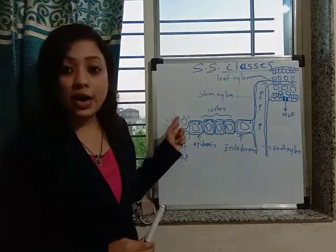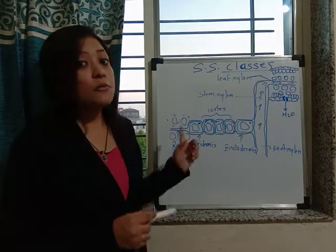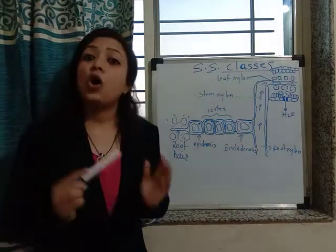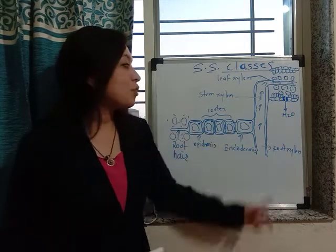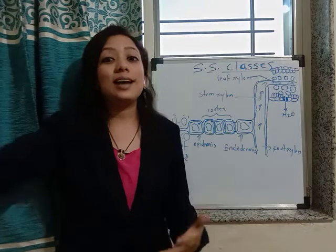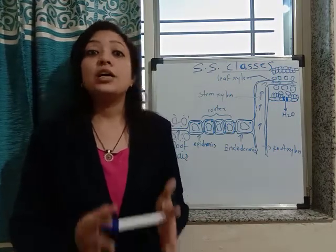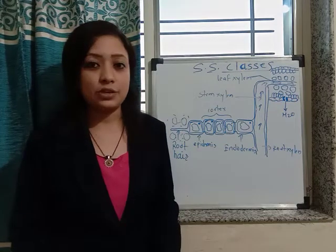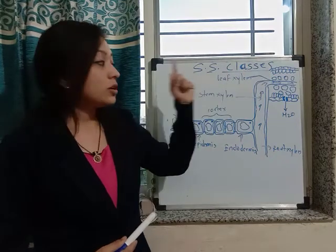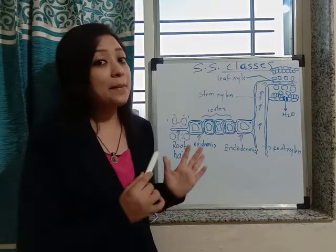To summarize: from soil up to the root hair, water enters by the process of diffusion. From root hair up to the endodermis, water is transported by the process of osmosis. And from root xylem up to the leaf xylem, the water flows in an upward direction by the process of suction pressure created at the top due to transpiration. So, transpiration sucks the water in the upward direction. This is how water and minerals are transported in the plant body.